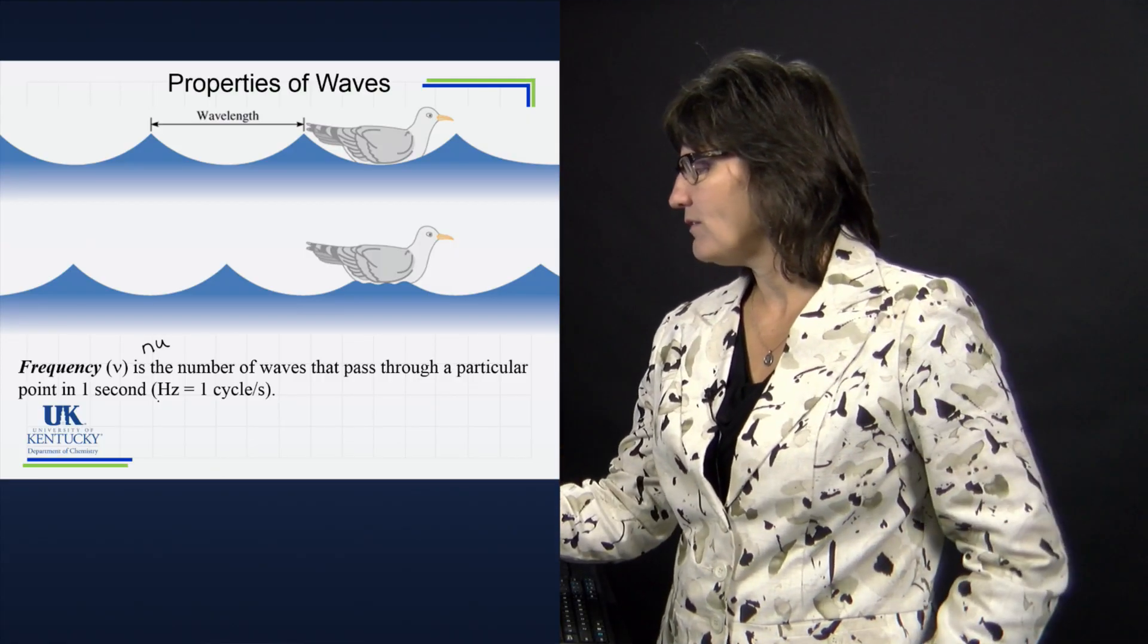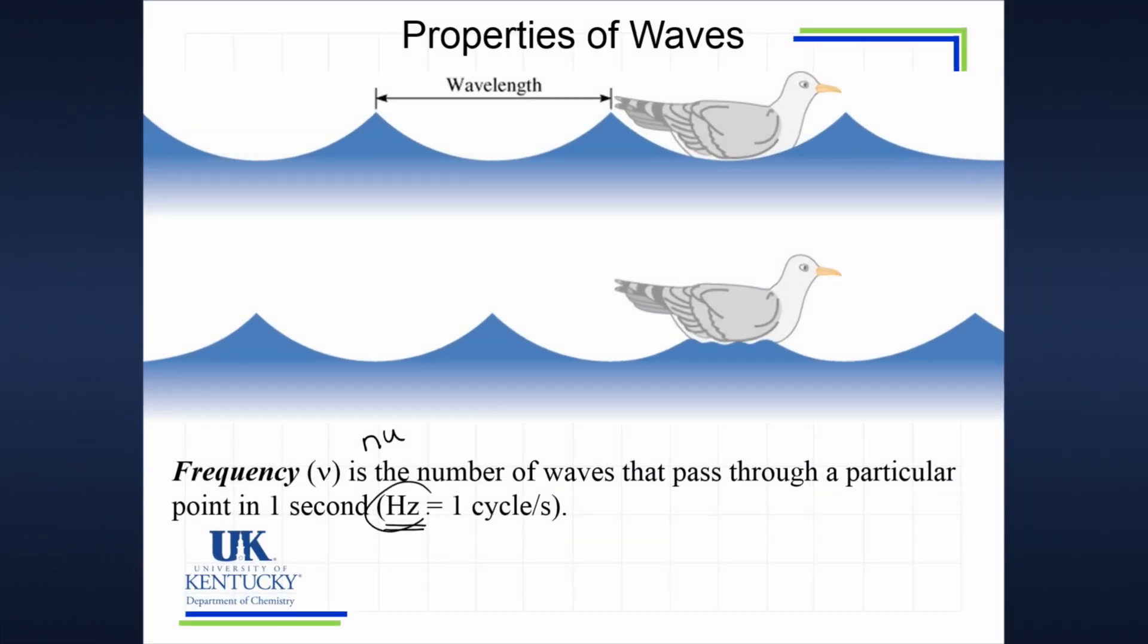You count how many go up and down in a second - that is frequency. Frequency's unit is a hertz. The hertz is the number of cycles or waves that go by in a second. When you see a hertz in a problem, I want you to translate that as one over seconds (1/s). That's the usable unit you'll do in calculations so things will cancel the way you need them to.